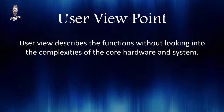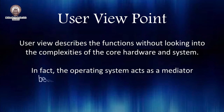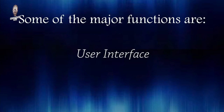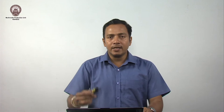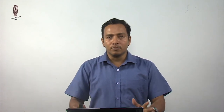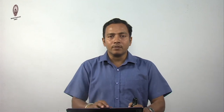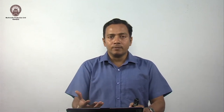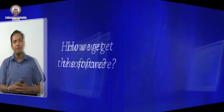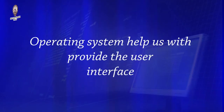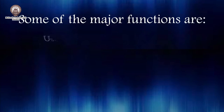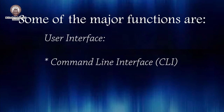Under the user viewpoint, the first function is the user interface. When we want to use the computer, we need an interface — basically a platform so that we can make use of the computer. For example, if I want to type something, I need software, and it is the operating system that provides us with the user interface. There are two types: the Command Line Interface, also known as CLI, and the Graphical User Interface, known as GUI.